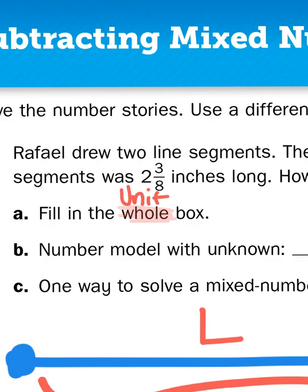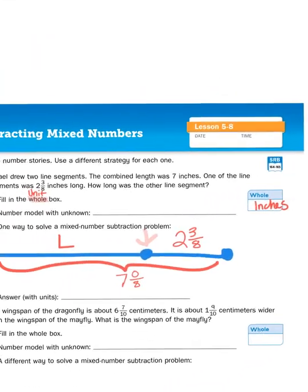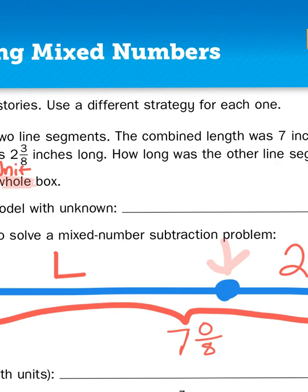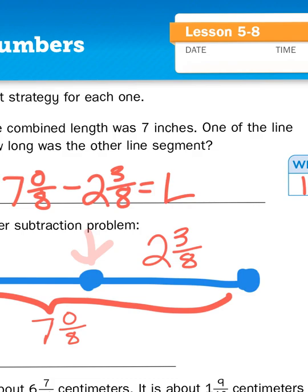What unit am I measuring? Well, I'm measuring inches because that's how long the segments are in inches. So here's my number model with an unknown. I'm going to take my longer distance, seven inches and 0/8, and I'm going to subtract 2⅜. And that's going to give me my unknown L.